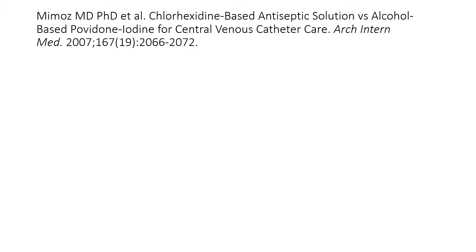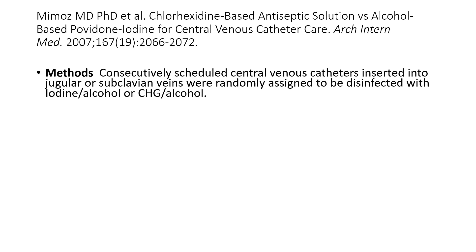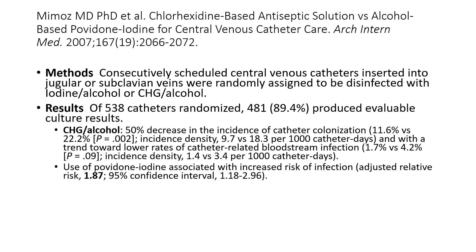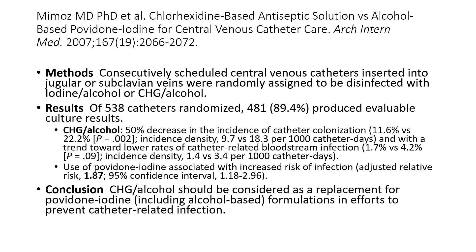A further study compared chlorhexidine and iodine in reducing infection among patients undergoing any central venous catheter placement. In 538 catheters randomly assigned to chlorhexidine-alcohol versus povidone iodine with alcohol, those in the chlorhexidine group had a 50% decrease in the incidence of catheter colonization, with a trend toward lower rates of catheter-related bloodstream infection. In summary, chlorhexidine in alcohol should be considered as a replacement for povidone iodine, as it is much more effective in preventing catheter-related infections.